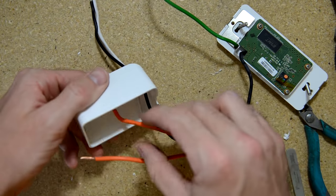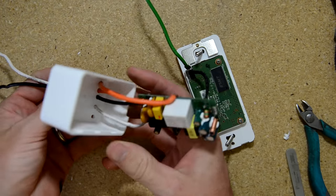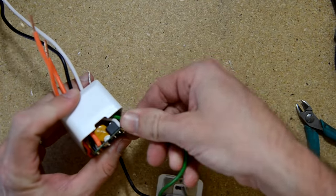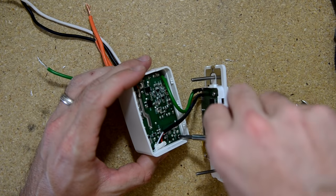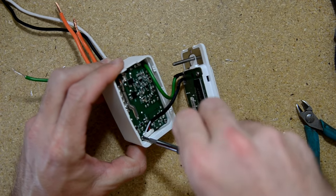Feed all the wires back through the appropriate holes. It's going to be a tight fit because of the output wire on the side of the board. Just take your time. Press the board back in, install two screws, and press it all back together.